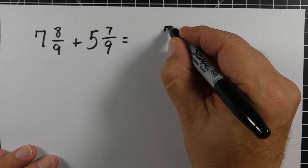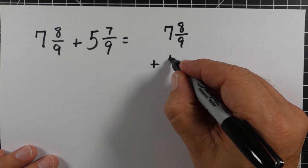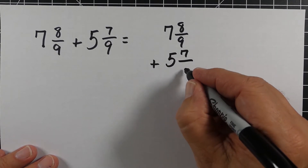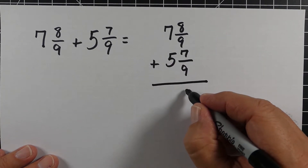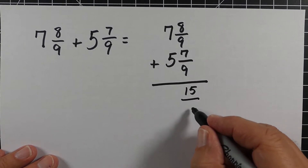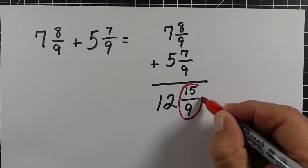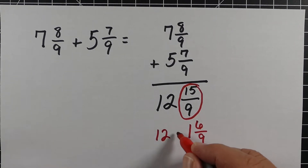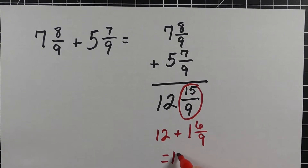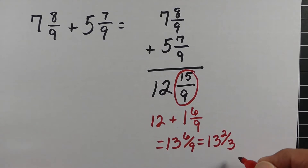Next example: 7 and 8/9 plus 5 and 7/9. The denominators are the same, so I stack them. We keep 9 as the denominator. The whole numbers 7 plus 5 equal 12. When we add 8 plus 7 we get 15, so we have 15/9, which we need to turn into a mixed number — that's 1 and 6/9. Adding that to 12 gives us 13 and 6/9. This problem actually simplifies further: dividing both 6 and 9 by 3 gives us 13 and 2/3.